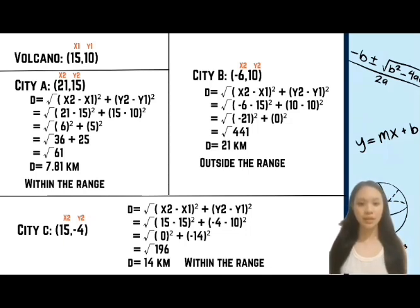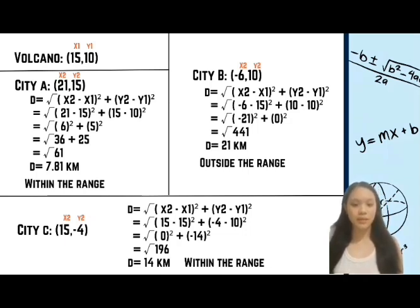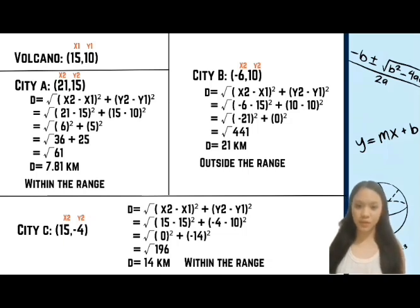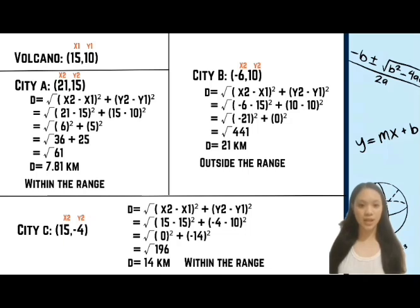For City C, we find x₁ = 15, y₁ = 10, x₂ = 15, y₂ = -4. D = √[(15 - (-4))² + (15 - 10)²]. So 15 - (-4) = 11 and 15 - 10 = 5. Then 11² = 121 and 5² = 25, giving 121 + 25 = 146. The square root of 146 is 12.8 kilometers. Since 12.8 km is less than 14 km, City C is within the range of the volcano.